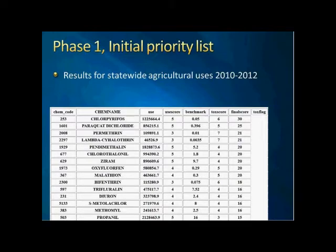The current watershed version is only for agriculture because urban doesn't have that kind of high-resolution data. We are thinking about urban PUR data downscaling, such as by considering land use and population. Before showing the mathematical part, I want to display the results from the phase one prioritization. Here is an example for the statewide agriculture annual uses during three years, 2010 to 2012.